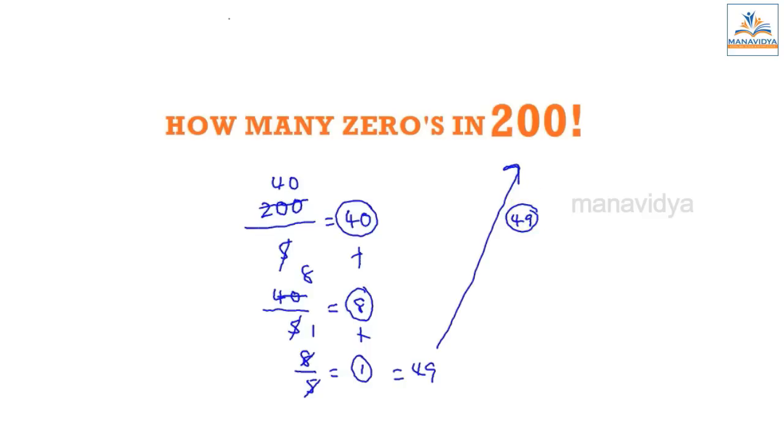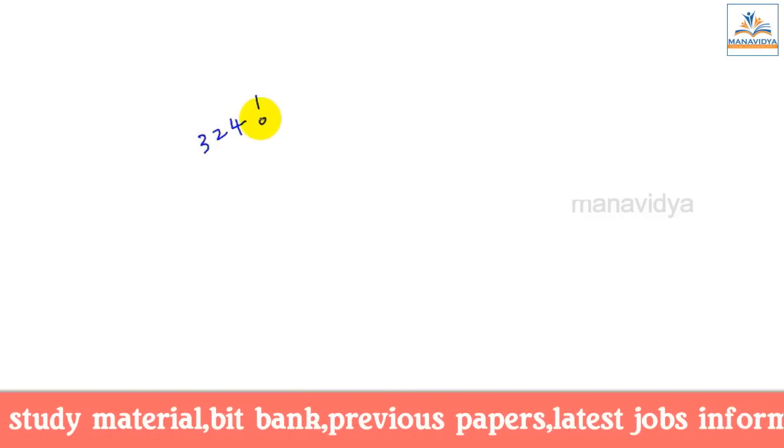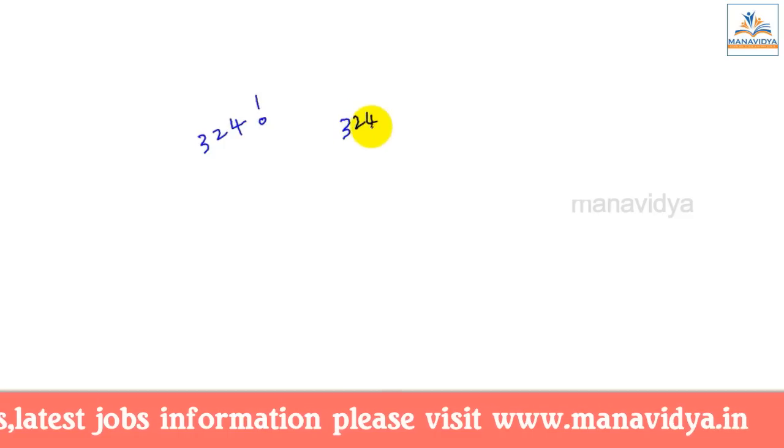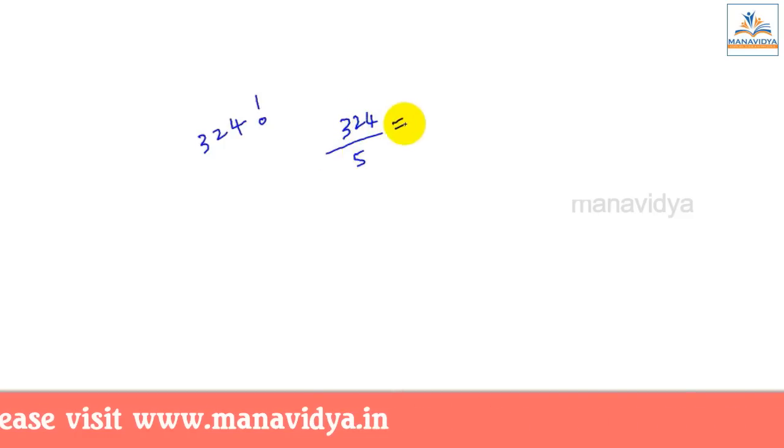Let's show another example for a better understanding. 324 factorial, how many zeros? We have 324 factorial.